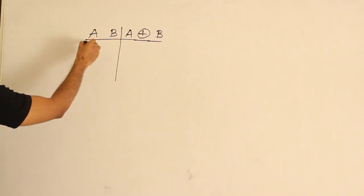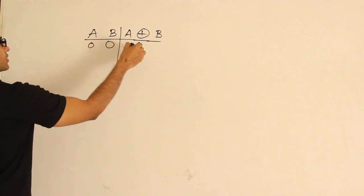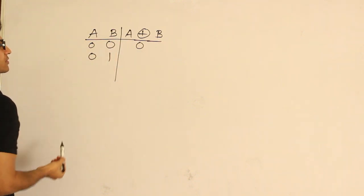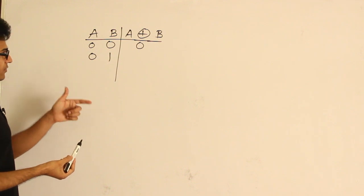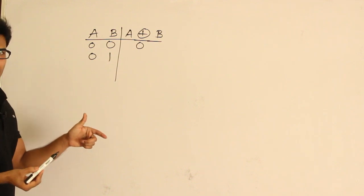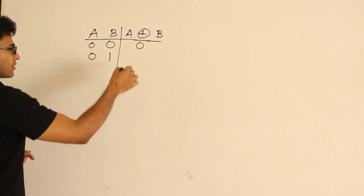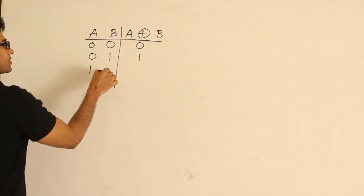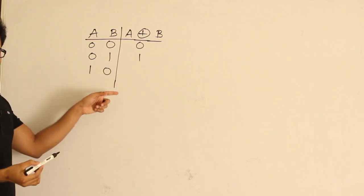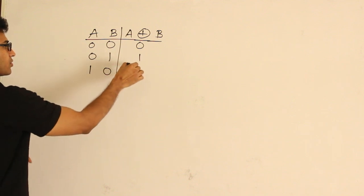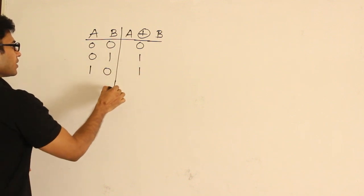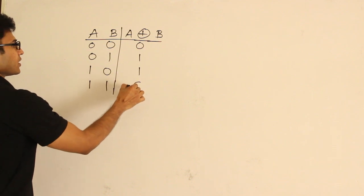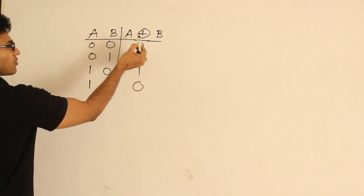For example, if I have 0 XOR 0, it is 0. For 0 XOR 1: sum is 1, divide by 2, remainder is 1. For 1 XOR 0: 1 plus 0 is 1, divide by 2, remainder is 1. And 1 XOR 1: 1 plus 1 is 2, divide by 2, remainder is 0. That is how it acts.